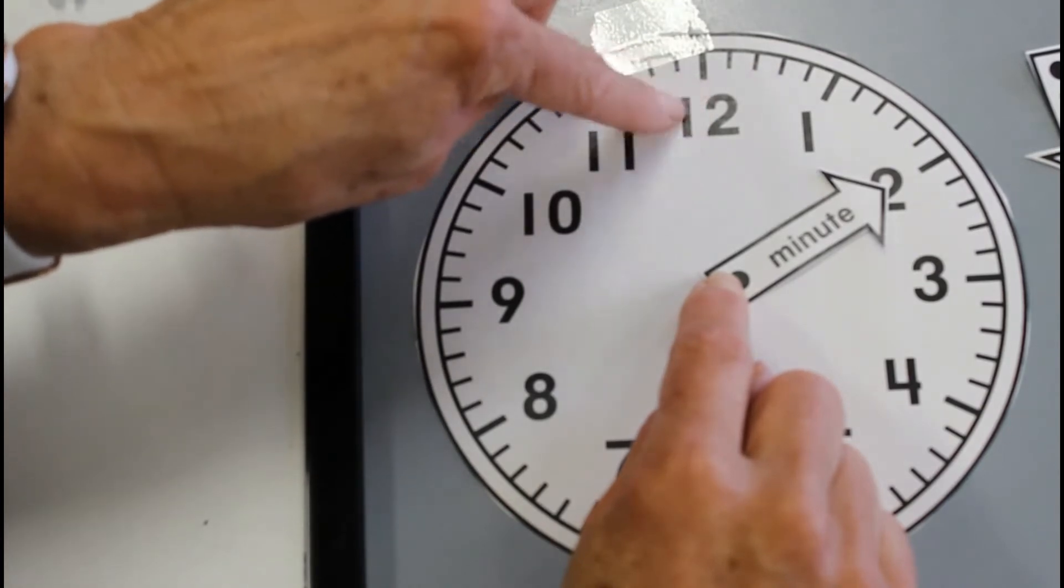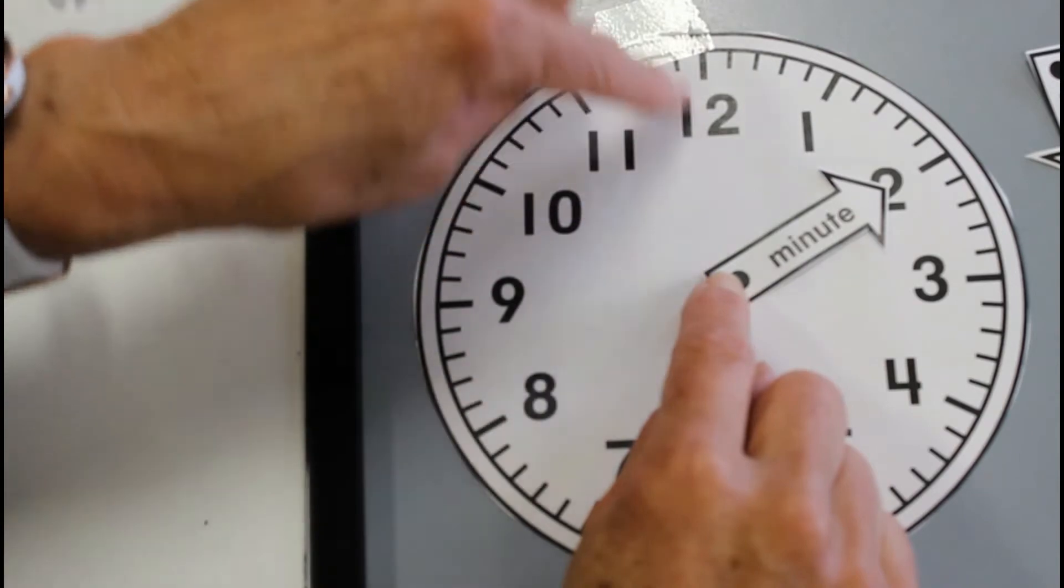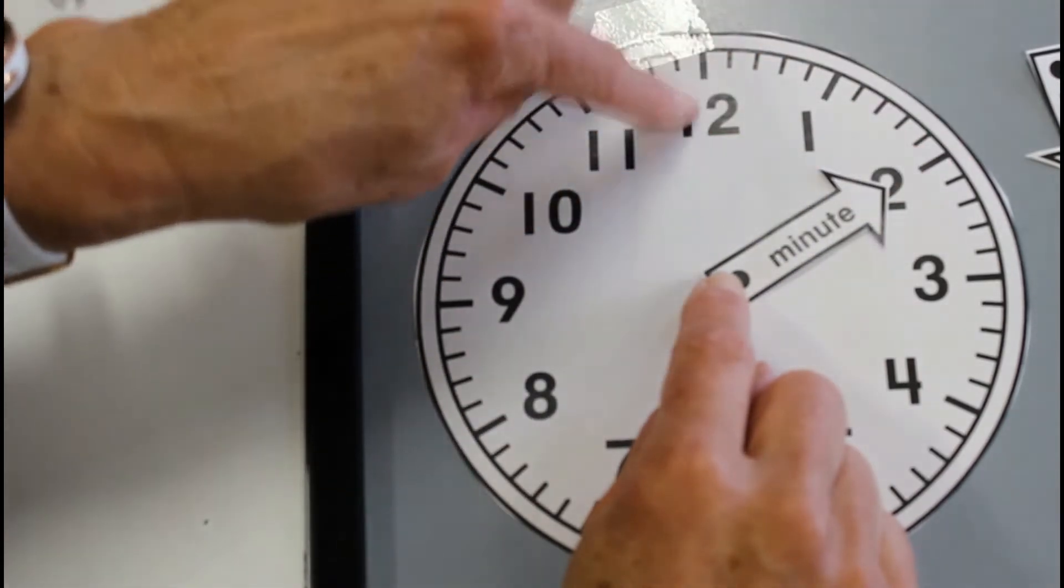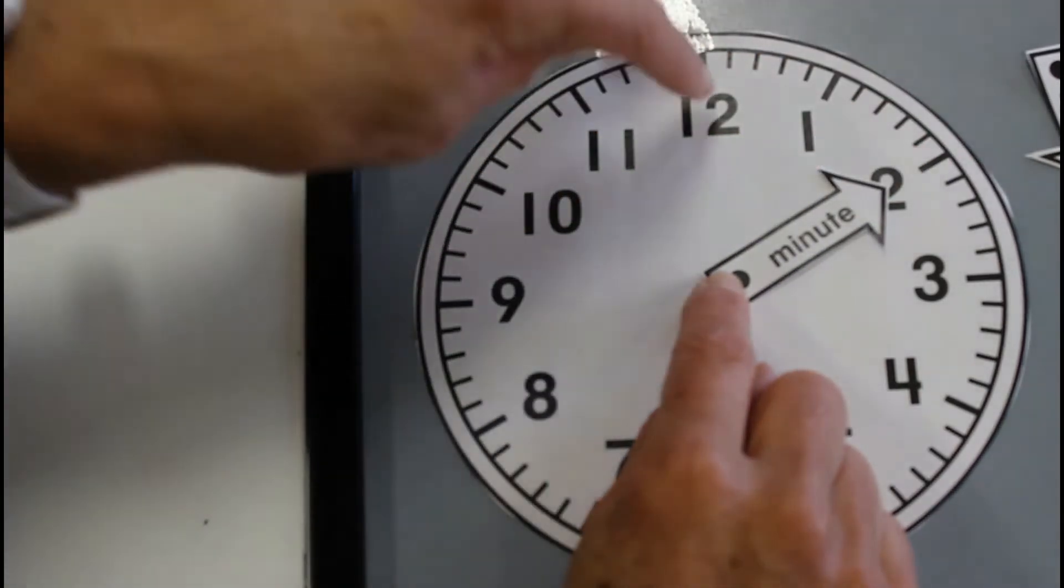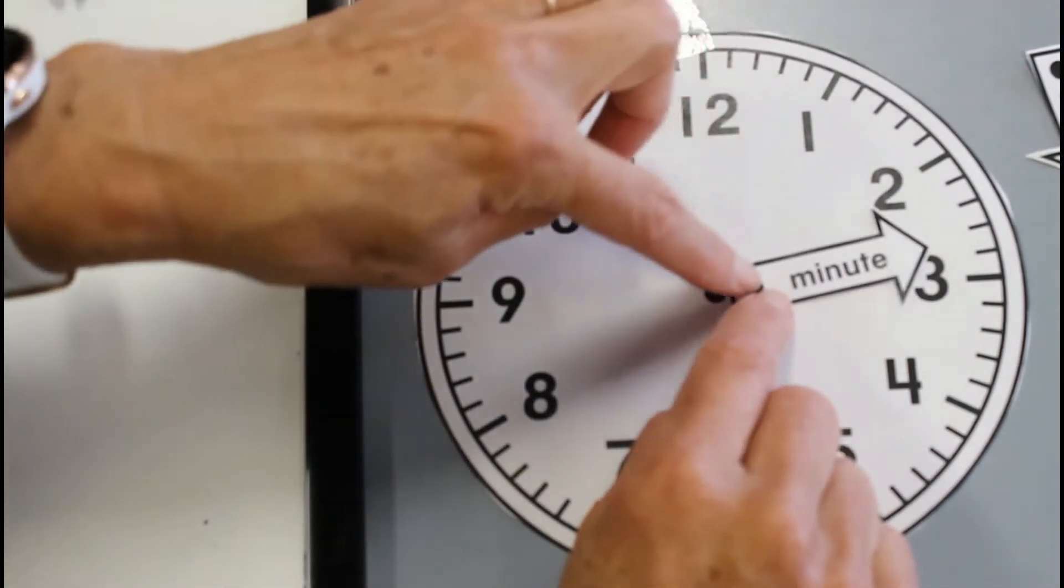That's what the ten minutes past means. We just don't say twelve, but that's what it means. It's ten minutes past the twelve number. So it's ten minutes past twelve. And if we keep going on, this is fifteen minutes past.